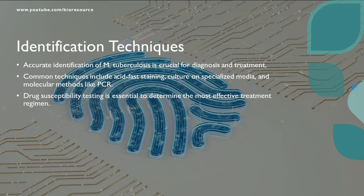The accurate identification of Mycobacterium tuberculosis is crucial for diagnosis and treatment. Various techniques are available, including acid-fast staining, culturing on specialized media, and molecular methods like PCR. Recent advances in molecular diagnostics and point-of-care testing have improved turnaround times for identifying the disease.